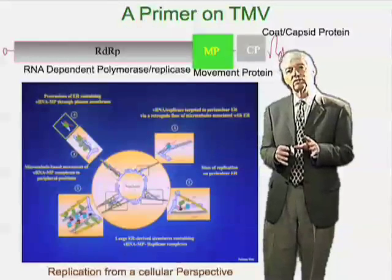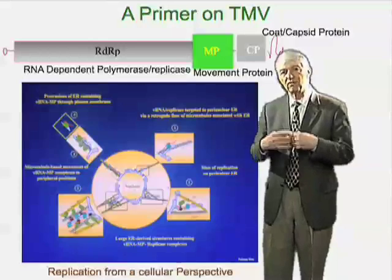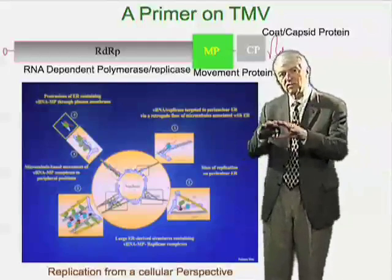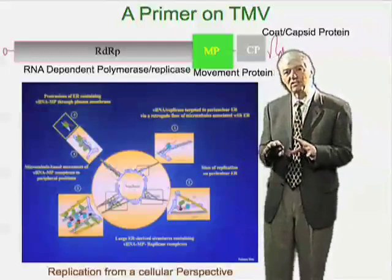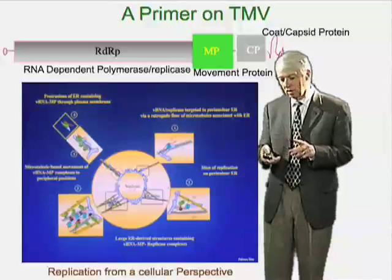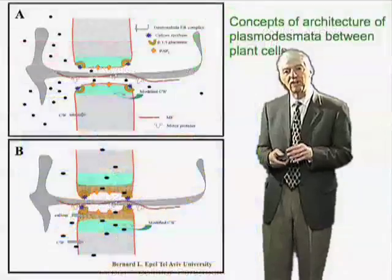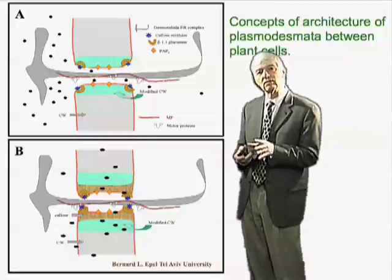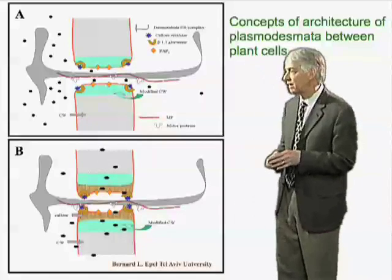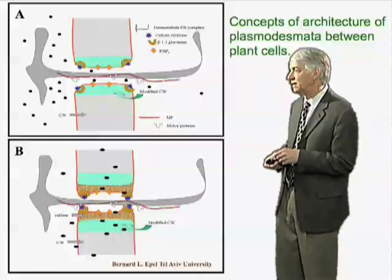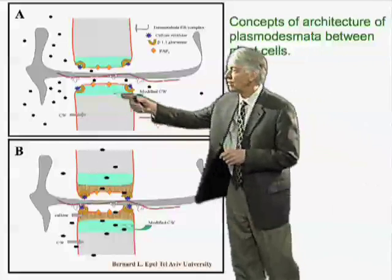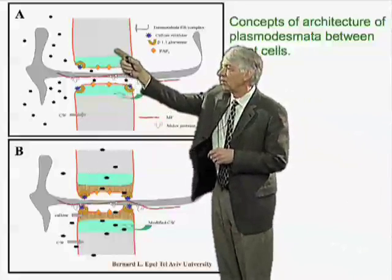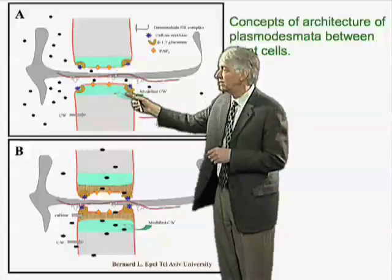Unlike animal viruses, plant viruses can't bud from their cell membrane and then be absorbed by others, because plant cells are surrounded by very rigid cell walls. These cell walls are penetrated by structures known as plasmodesmata. This cartoon, developed by my colleague Bernie Eppel in Israel, shows a little bit of the structure of those plasmodesmata.